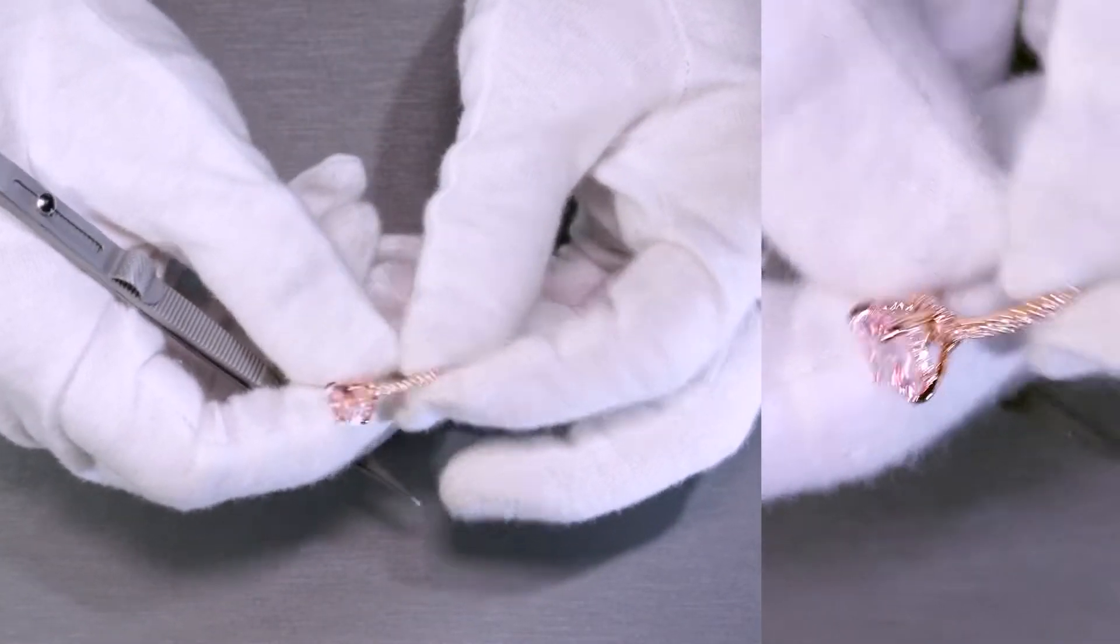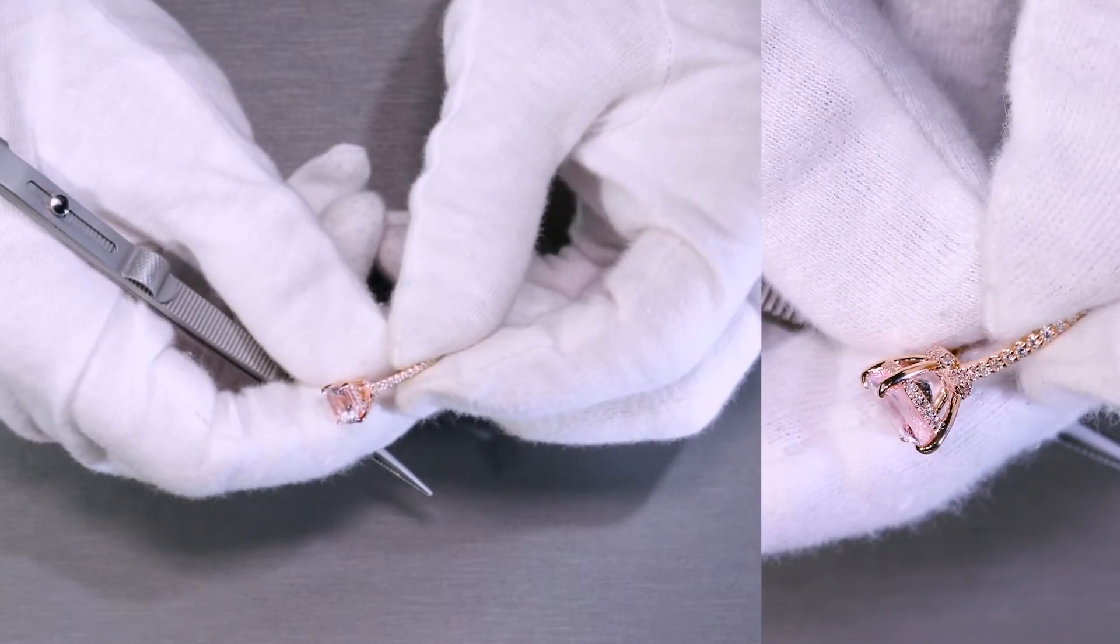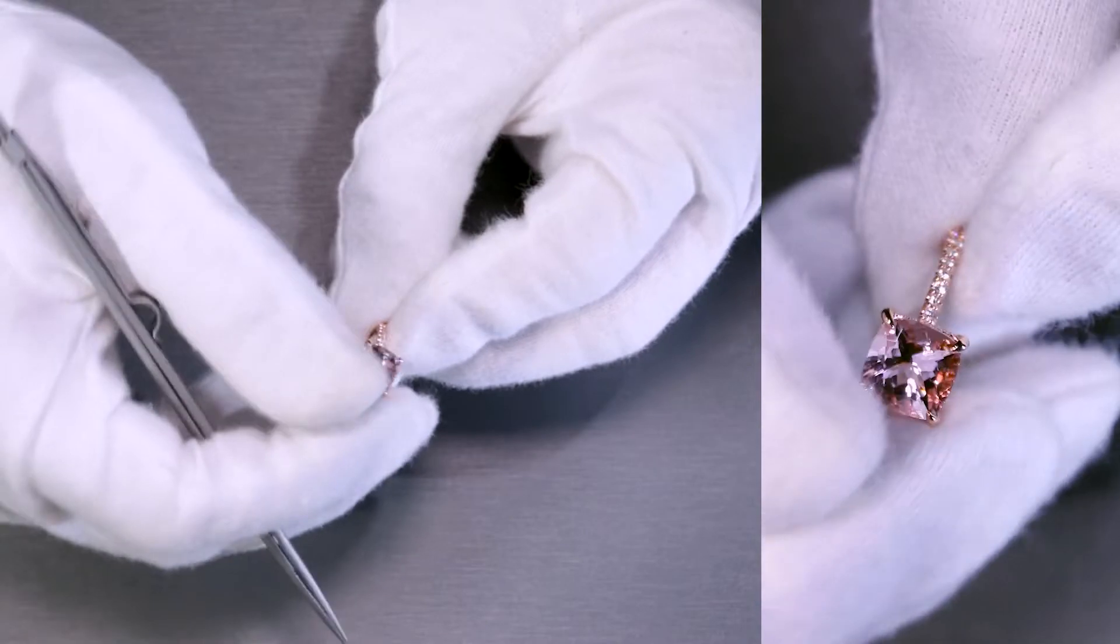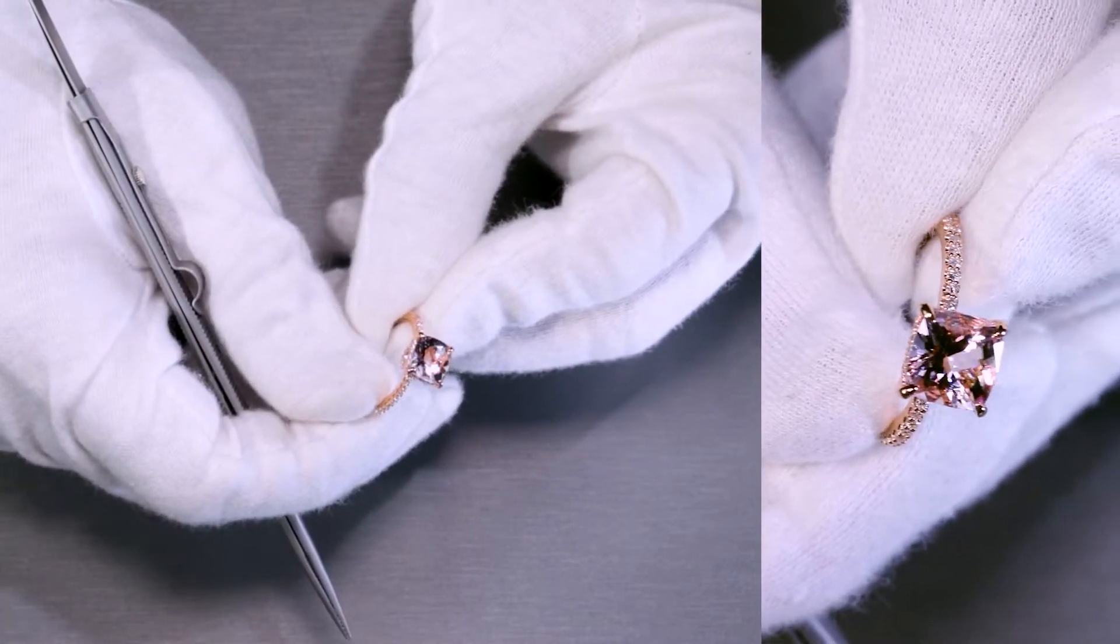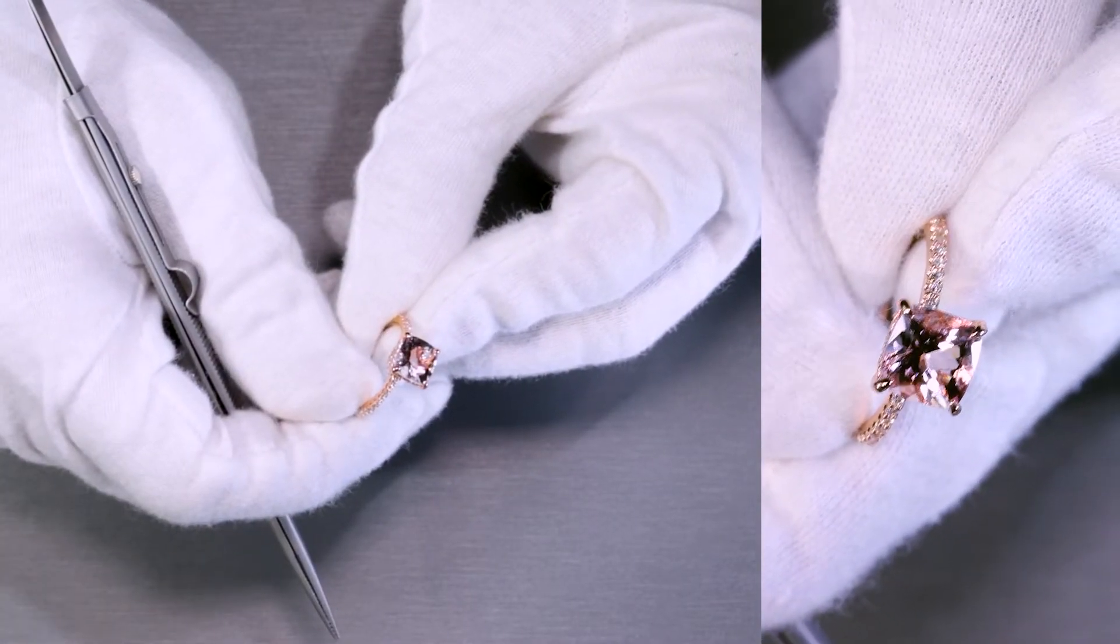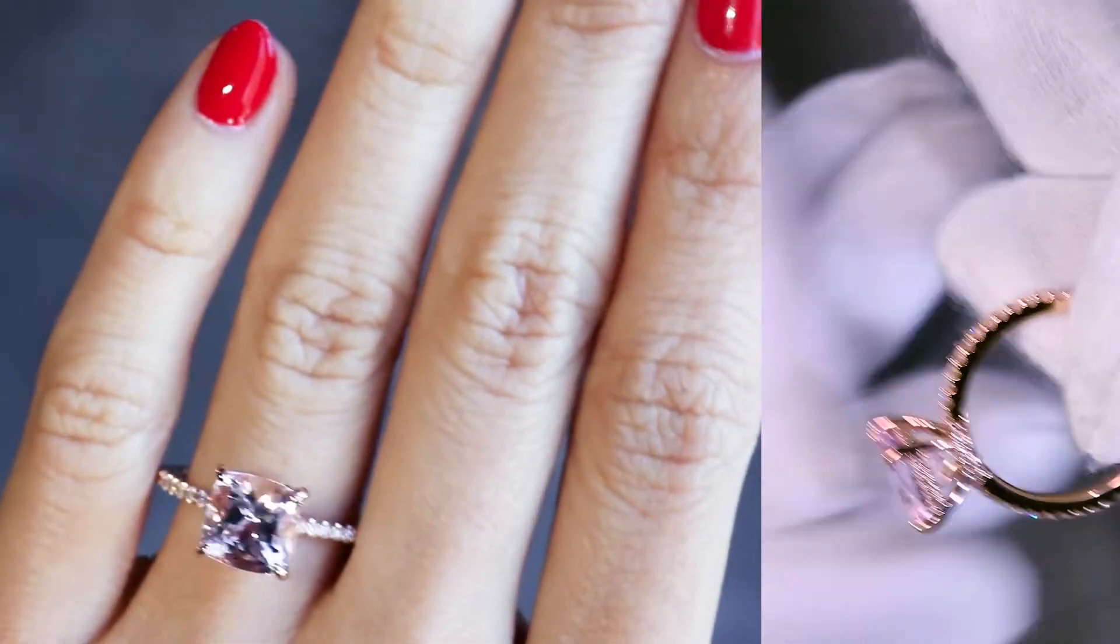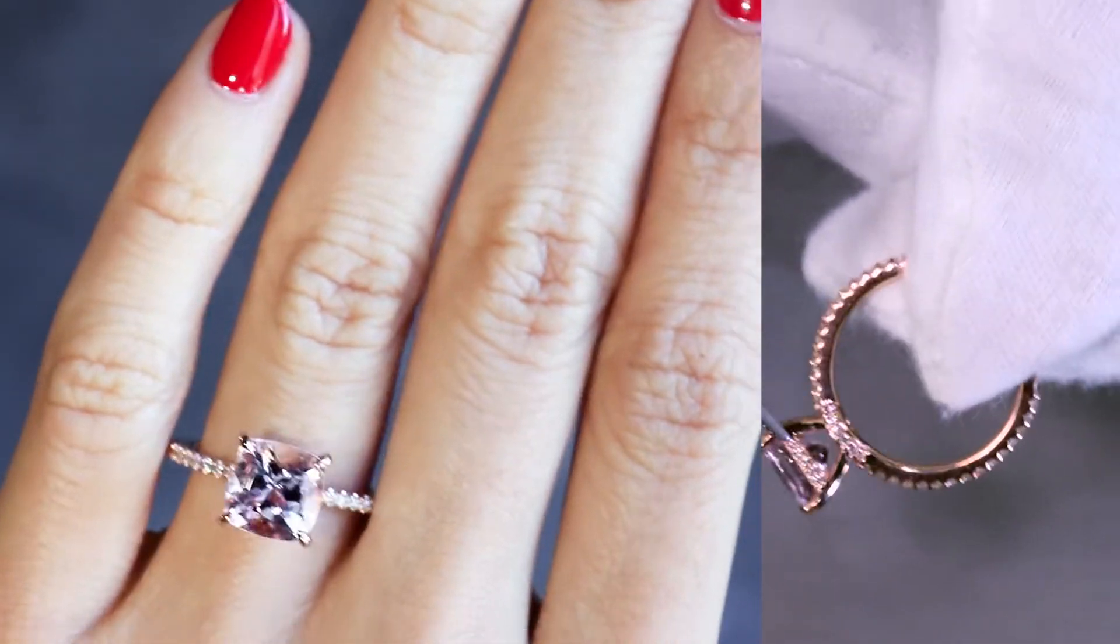So, the hidden halo and diamond rail, these are words that are interchangeable in the market, but the overall idea is that it's hidden because if you take a look from the top down here, you should not be able to see the hidden halo. But as soon as you turn it to the side, you'll be able to see the diamonds along that metal bar there or the rail.